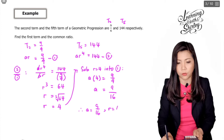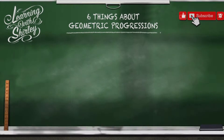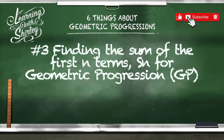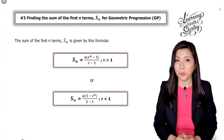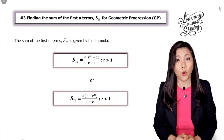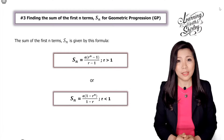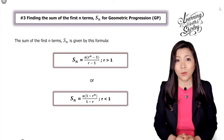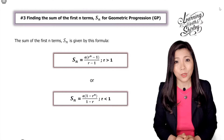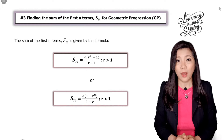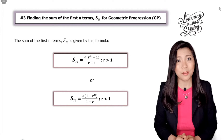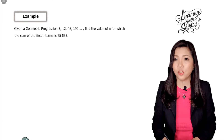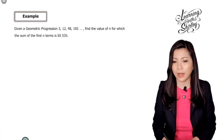To find the sum of the first n terms of a GP, we use the formula: Sn equals a times (r to the power of n minus 1) over (r minus 1) if r is greater than 1. But if r is less than 1, we use the formula: Sn equals a times (1 minus r to the power of n) over (1 minus r). Let's look at the following example.